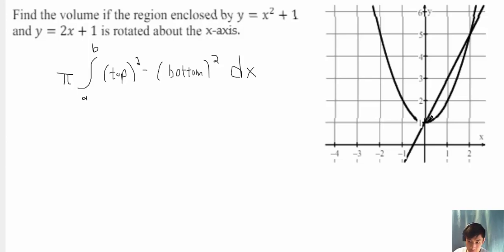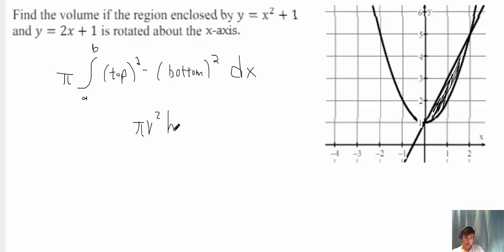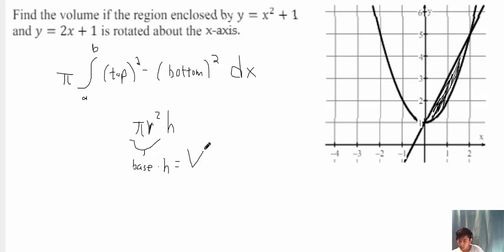The bottom function would be the function that's on the bottom of the enclosed area, which is just this area over here. To find the volume of any 3D figure, we would need to do pi r squared times h. The pi r squared represents the base of any 3D solid, and by multiplying the base by the height, we get the volume. We use pi r squared because we're rotating about the x-axis, which means we're forming a cylinder, and the volume of a cylinder is pi radius squared times height.